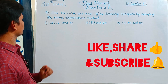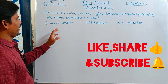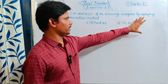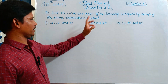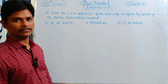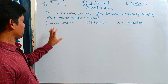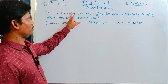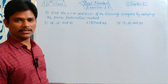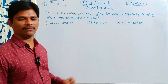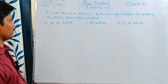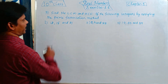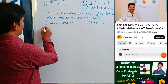Third question: find the LCM and HCF of following integers by applying the prime factorization method. So here 3 numbers are given. Find out the LCM and HCF by using the prime factorization method. First, you have to find out the prime factors of the given 3 numbers.